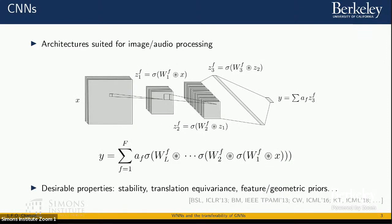Convolutional neural networks are architectures quite well suited for processing image or audio data because they display several desirable properties on these domains — such as stability, translation invariance, and good priors on features — adapted to the underlying problem geometry. Many of these properties arise due to properties of the convolution on these regular domains.